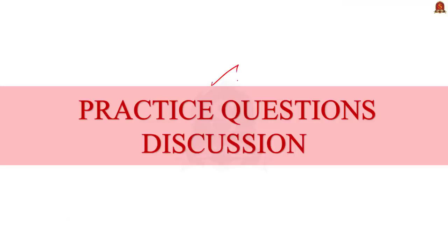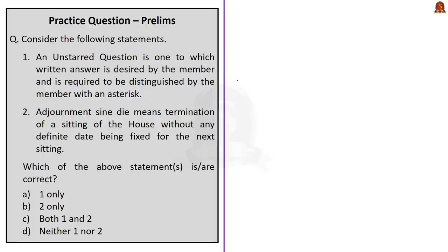Now let us see the practice questions based on today's news analysis. First question: Statement 1 says an unstarred question is one to which a written answer is desired and is required to be distinguished by the member with an asterisk — this is incorrect. The first half is correct but not the second half: a starred question is required to be distinguished with an asterisk, and a starred question requires an oral answer, not a written one. Statement 2 says adjournment sine die means termination of the sitting of the house without any definite date being fixed for the next sitting — this is correct. Statement 1 is incorrect and statement 2 is correct, so the correct answer is option B, 2 only.